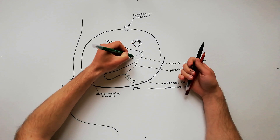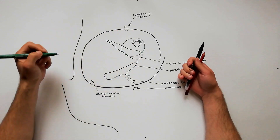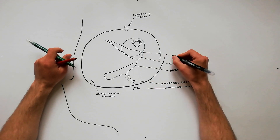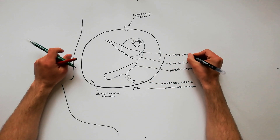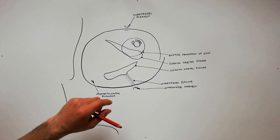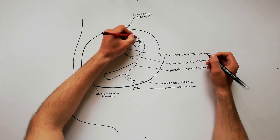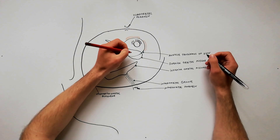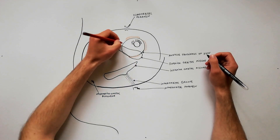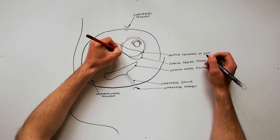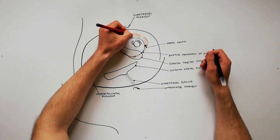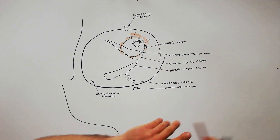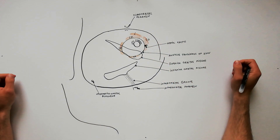We can now indicate the annulus tendinosus of Zinn, which is a ring of fibrous tissue surrounding the optic foramen and most of the medial part of the superior orbital fissure. The annulus of Zinn is the common origin of the four extraocular muscles: superior rectus, inferior rectus, medial rectus, and lateral rectus. The origins of the levator palpebrae superioris and the superior oblique muscles are located just outside the ring in its superomedial part.